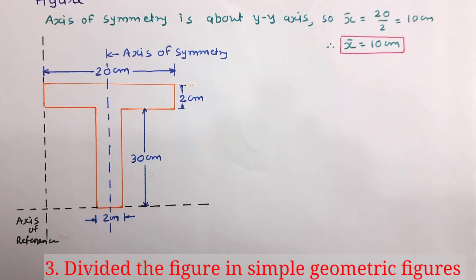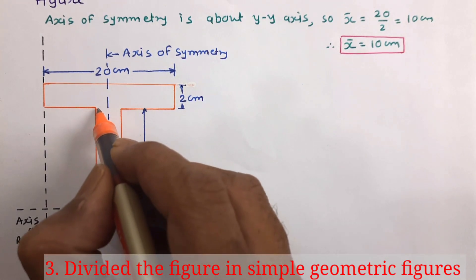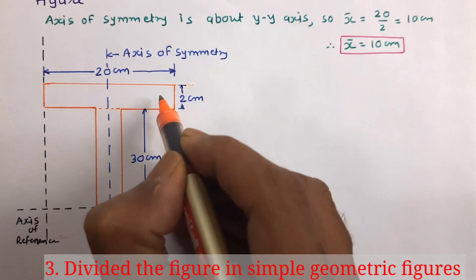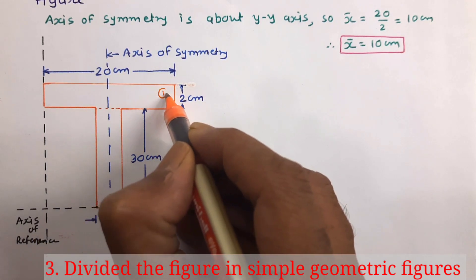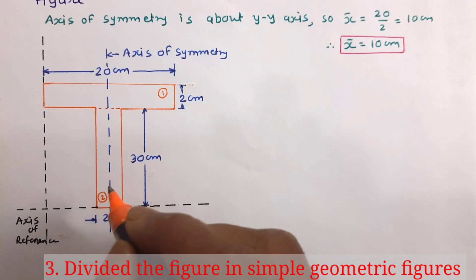Now the third step. In third step, we will divide the figure in simple geometric shapes. So here we can divide this into two simple rectangulars. This is rectangle 1 and this is rectangle 2.